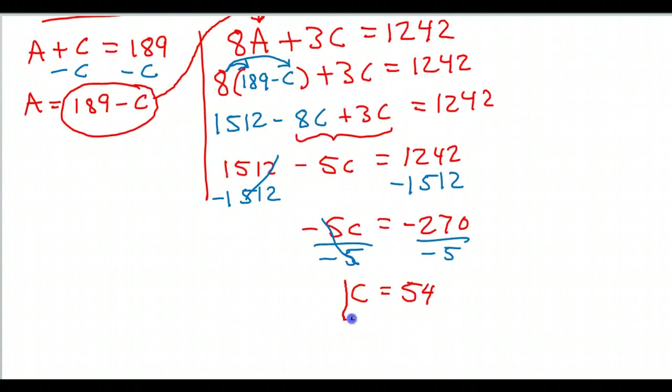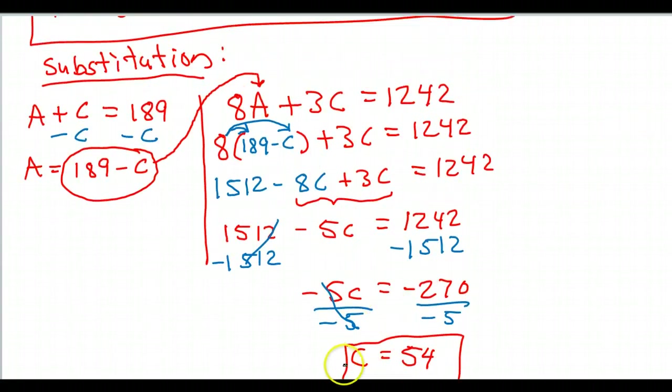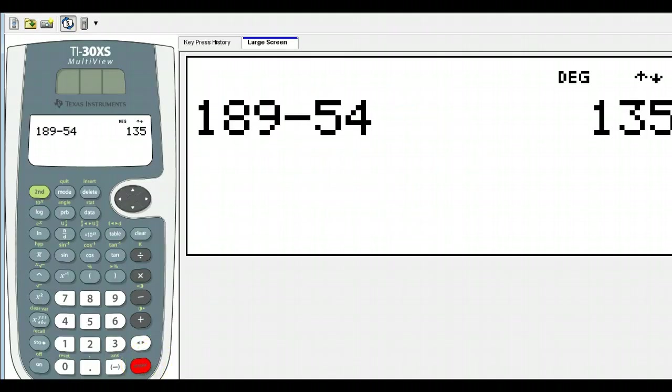Right there, I know the number of child tickets that were sold. 54 of those. Of course, once I know that, then I can figure out the number of adult tickets sold. Because the number of adult tickets should be 189 minus the number of child tickets. So that's 135.